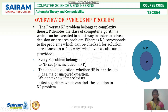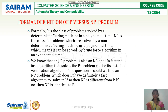Formally, P is the class of problems solved by a deterministic Turing machine and NP is the class of problems solved by a non-deterministic Turing machine in polynomial time.